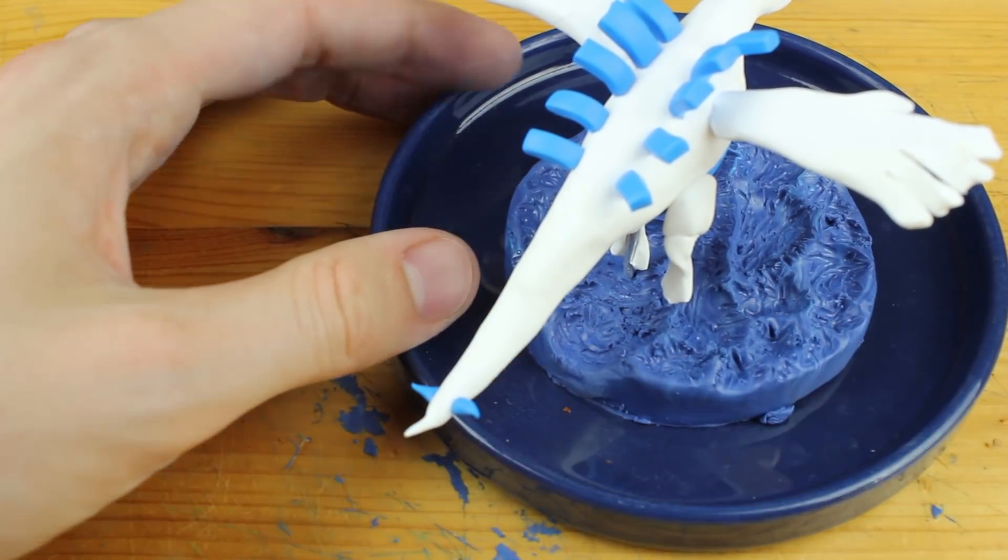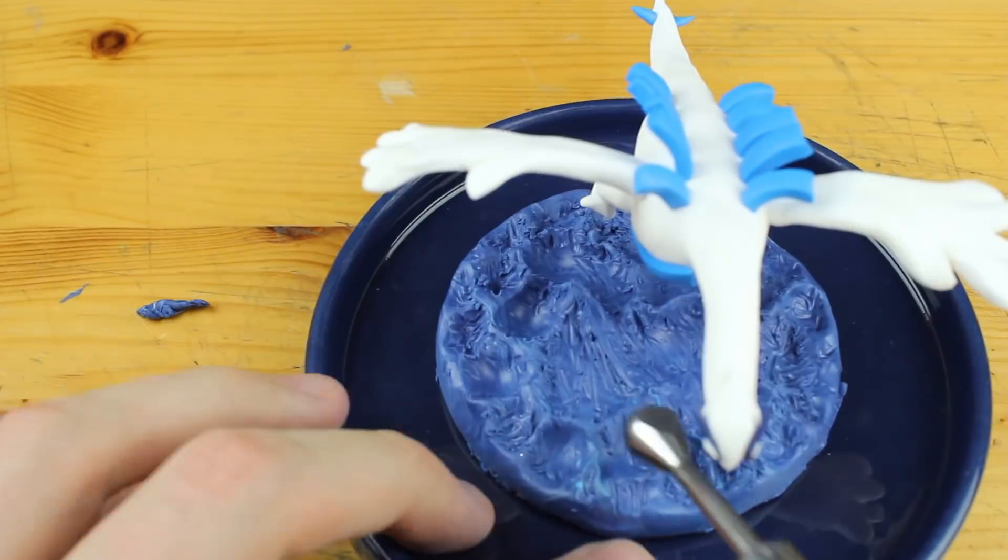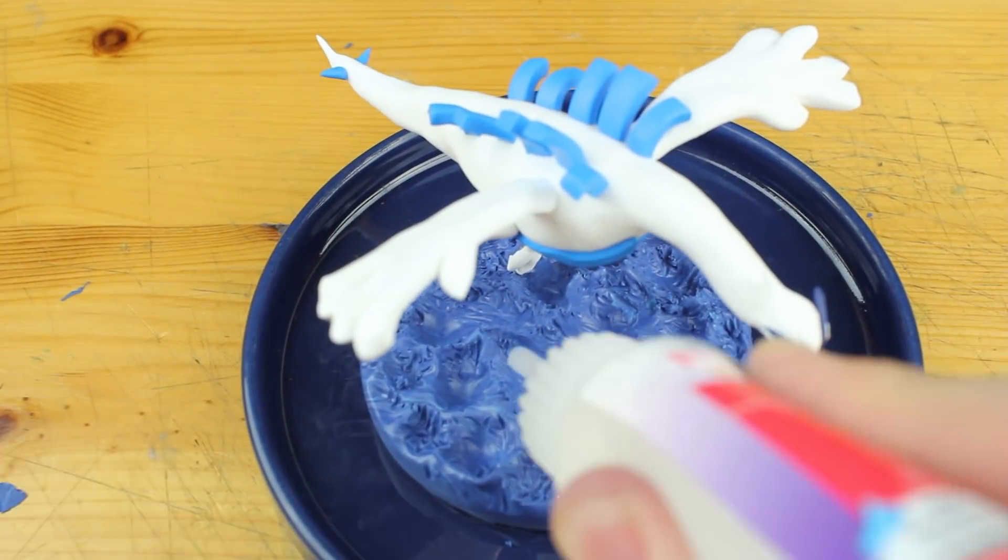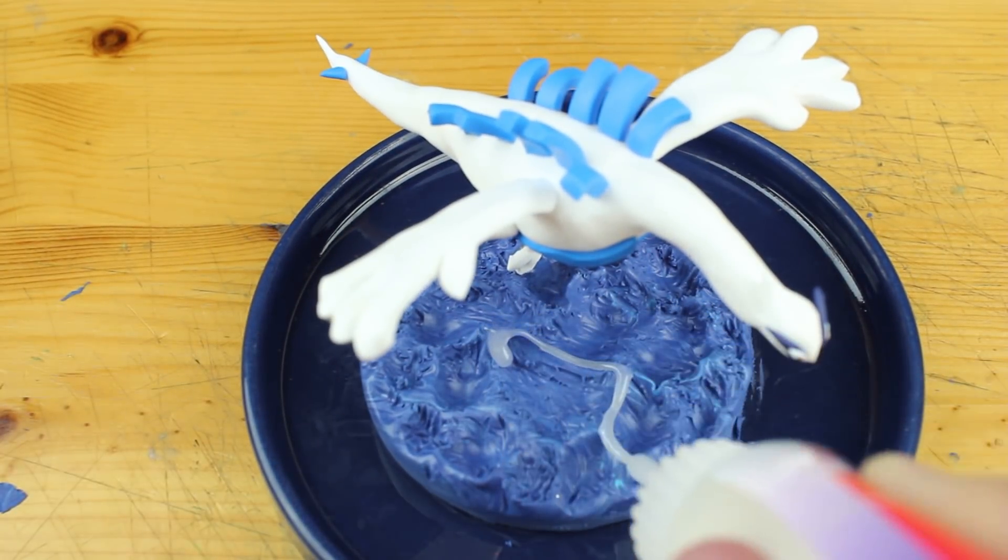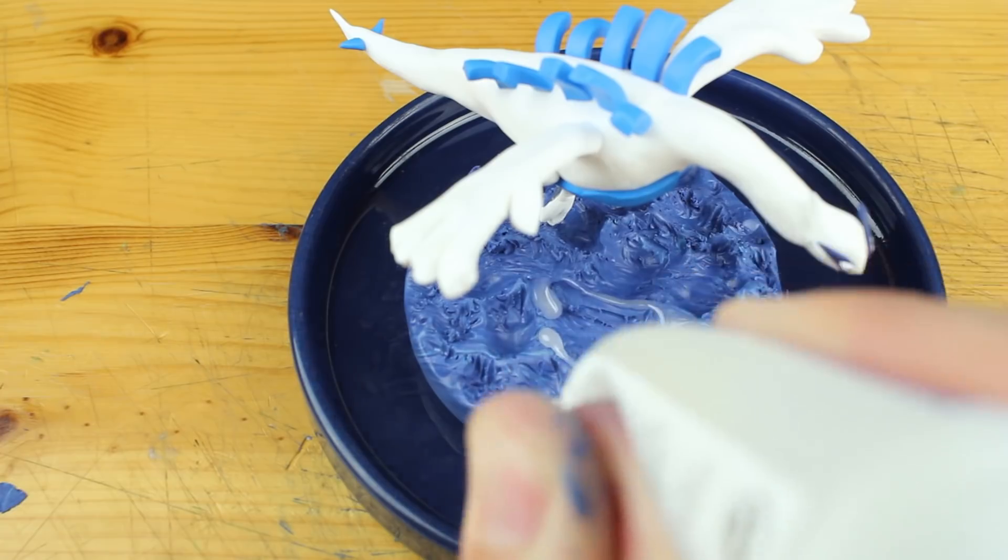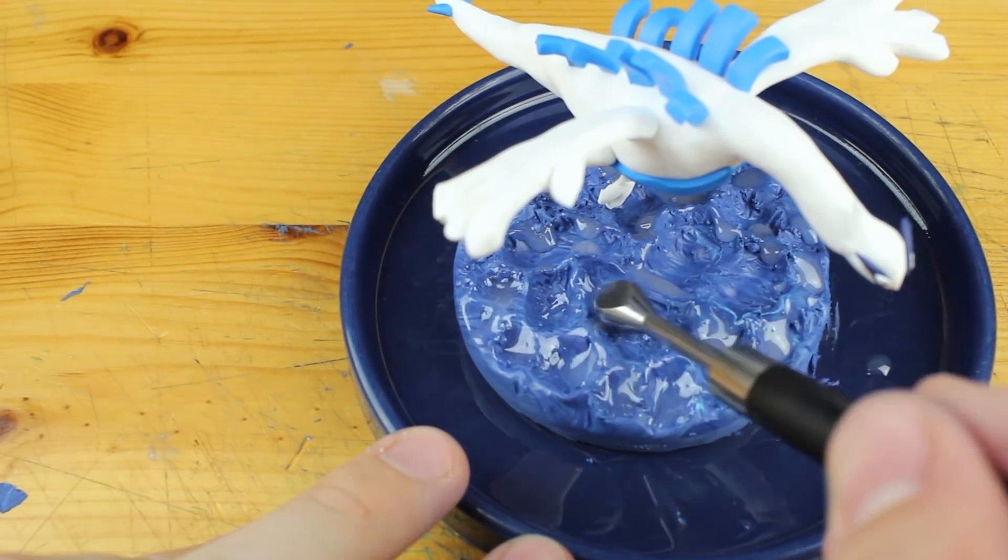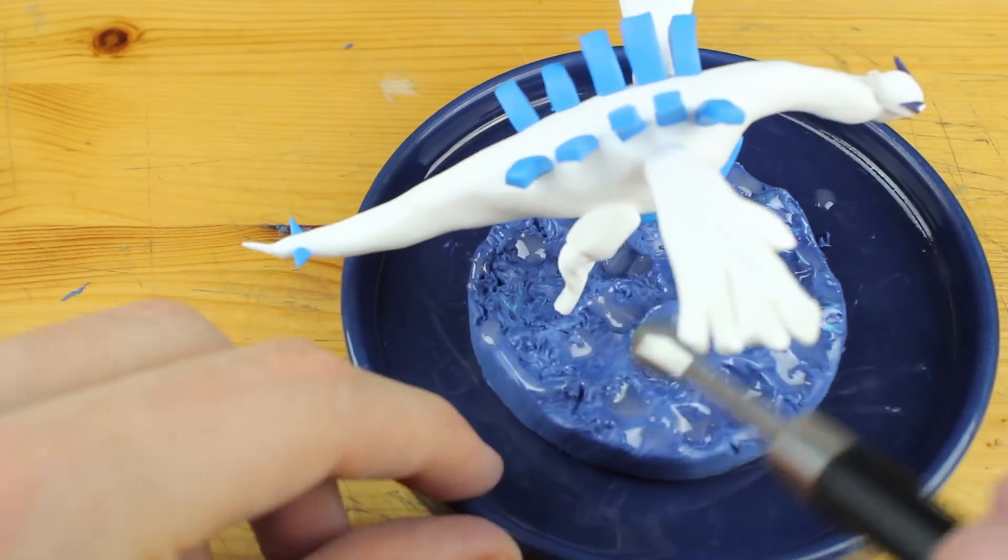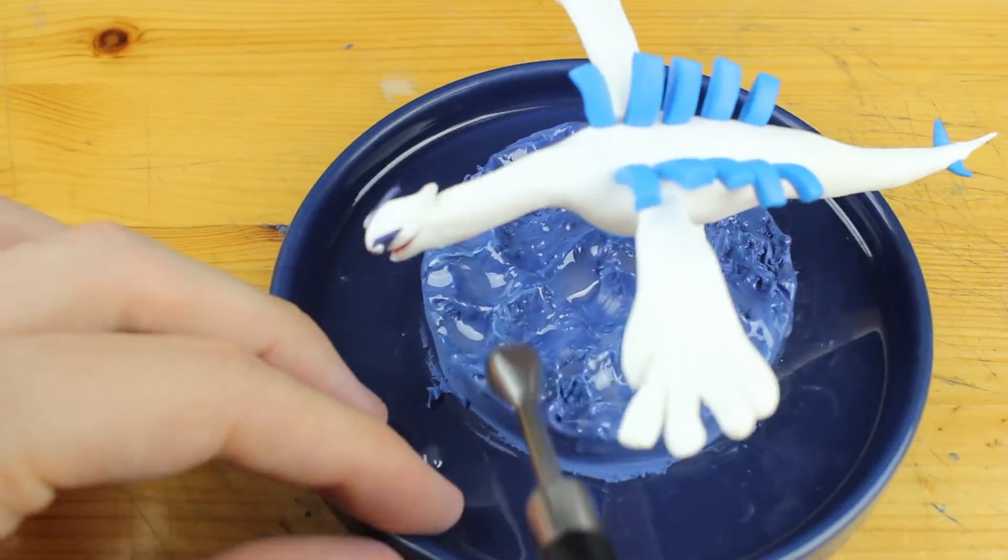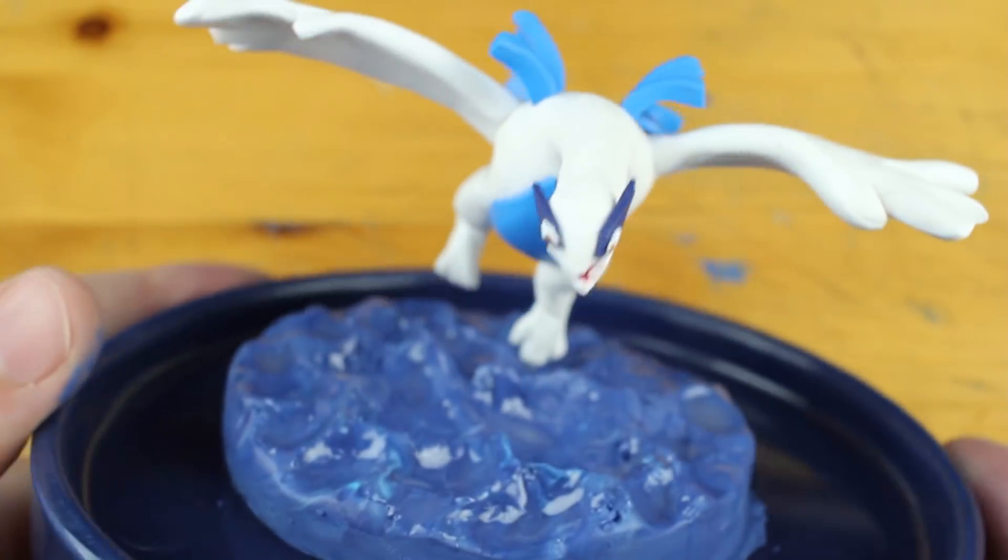And we are almost done and we will just place this liquid clay over the blue clay and this will make it more water-like. It looks more liquid. Okay, I think we're ready to go into the oven.